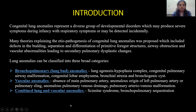Coming to the introduction, congenital lung anomalies represent a diverse group of developmental disorders which may produce severe symptoms during infancy with respiratory symptoms, or may be detected incidentally. Many theories explaining the etiopathogenesis of congenital lung anomalies were proposed, which included defects in the budding, separation and differentiation of primitive foregut structures, airway obstruction and vascular abnormalities leading to secondary pulmonary dysplastic changes.